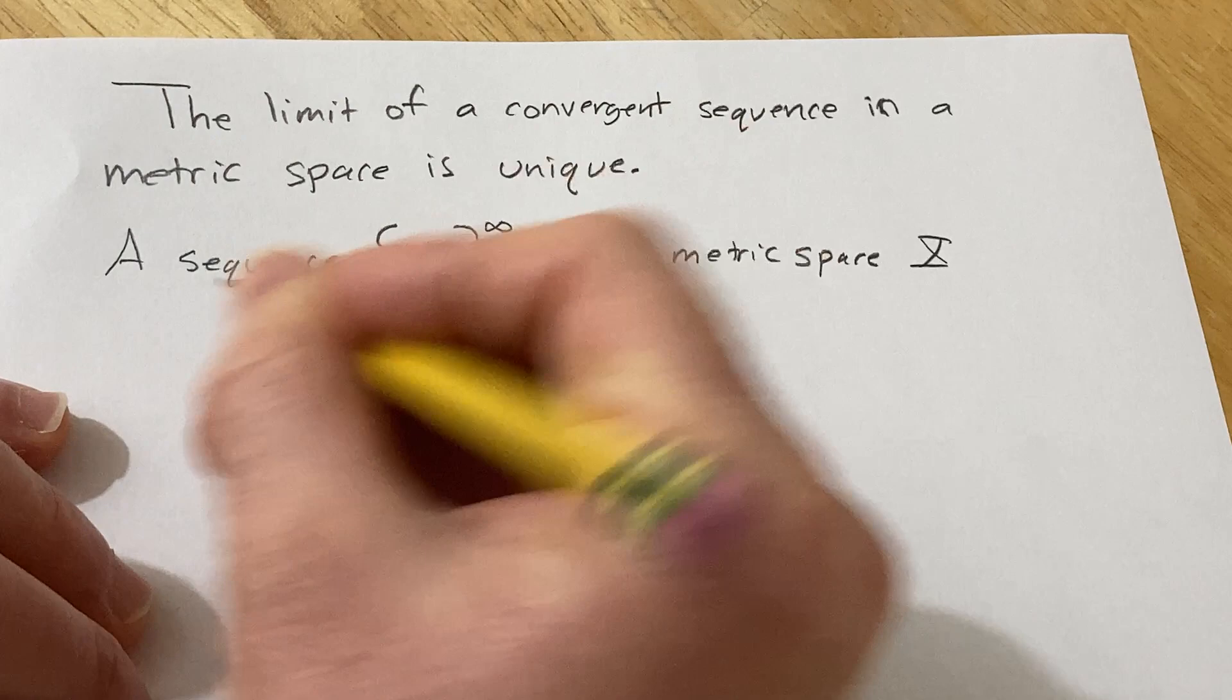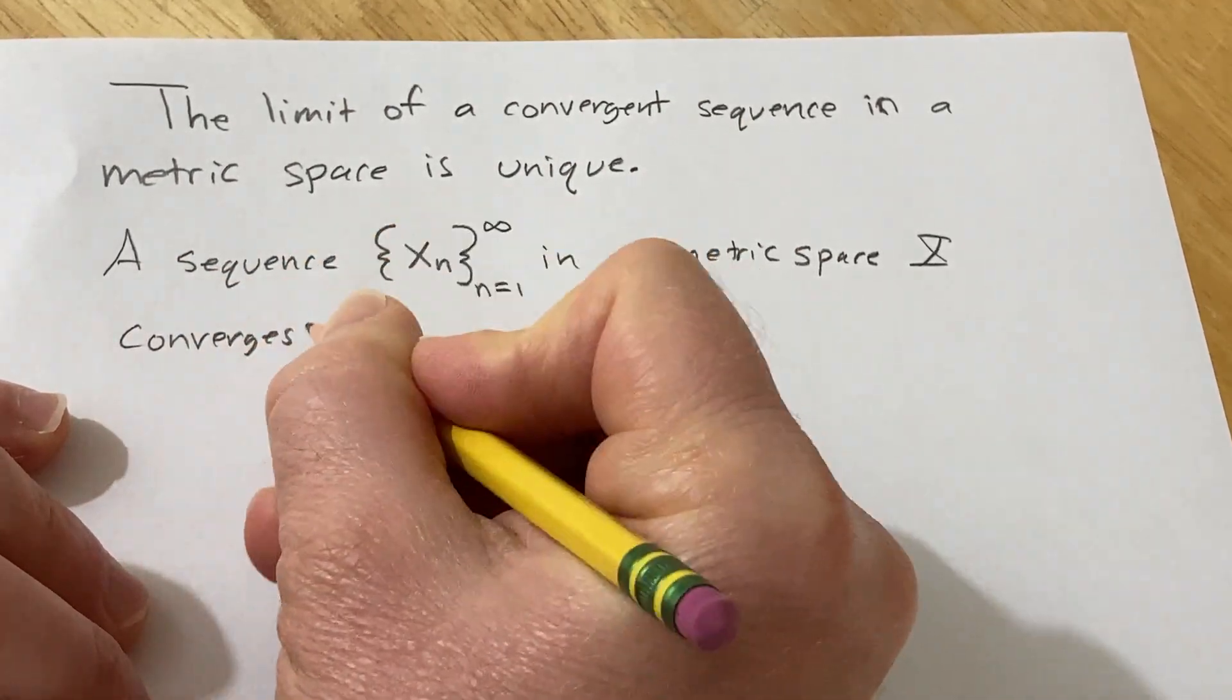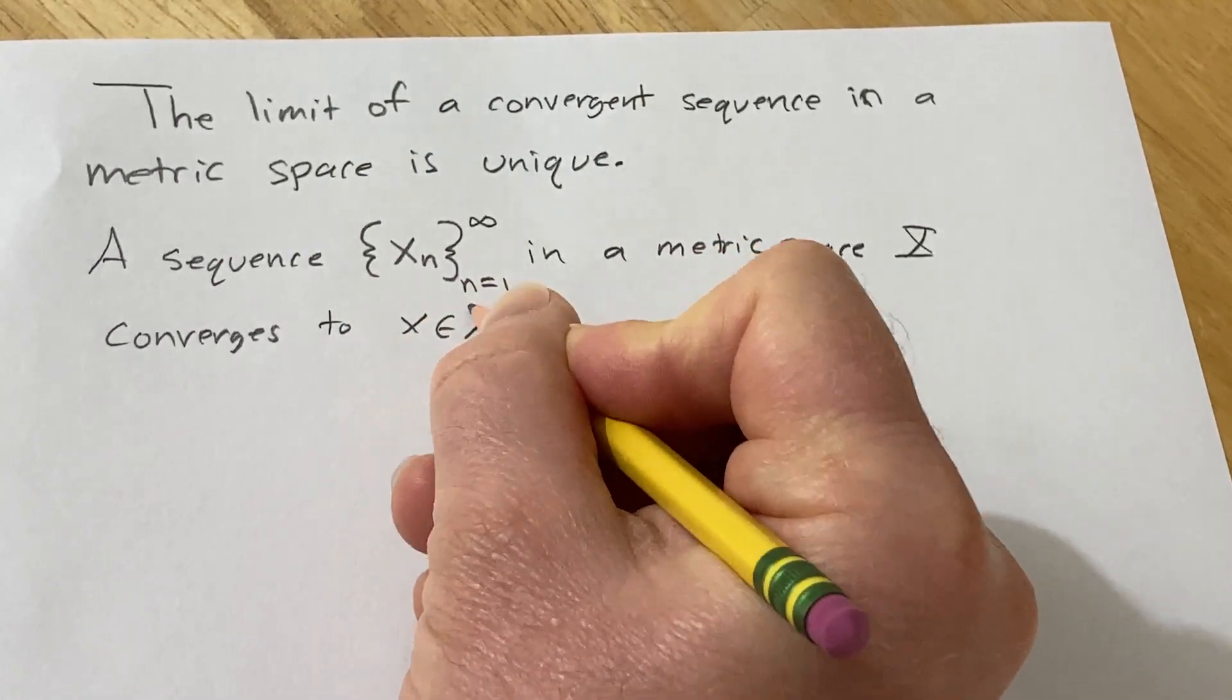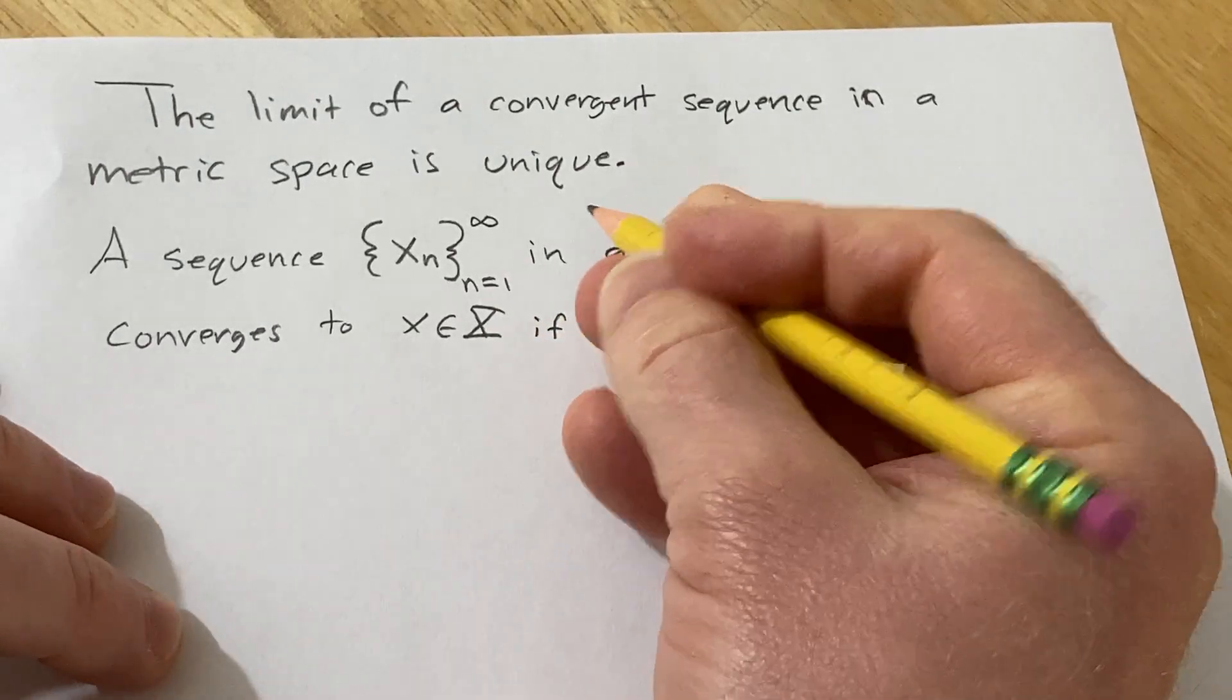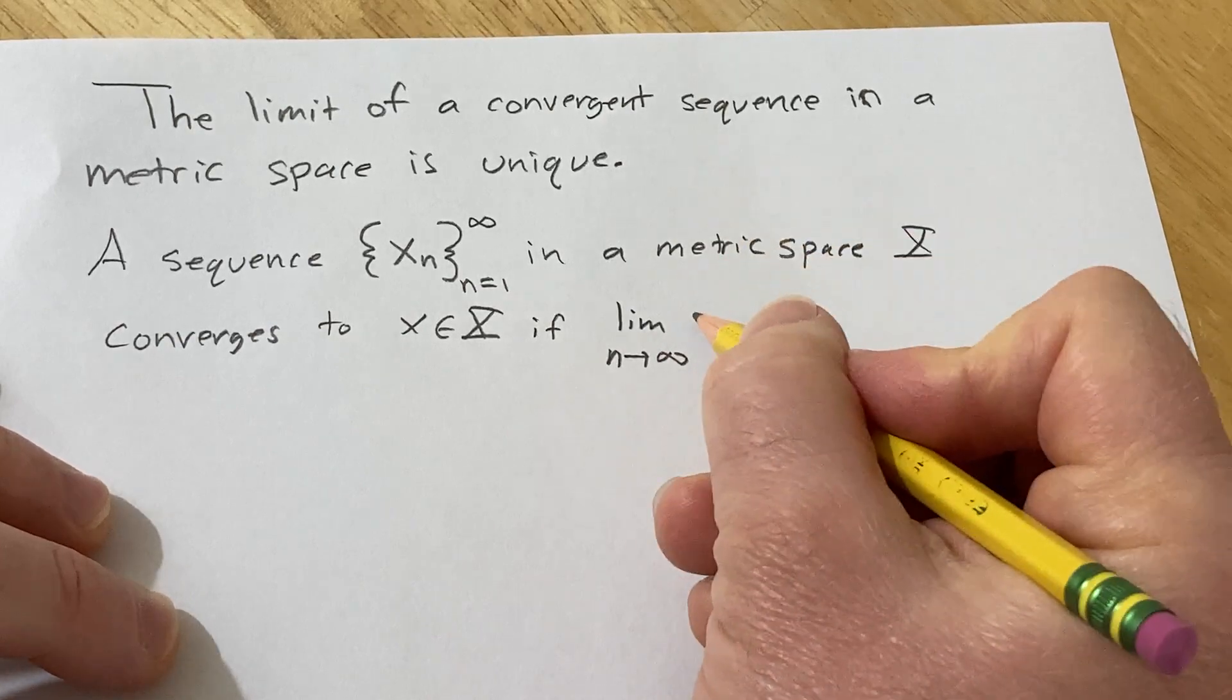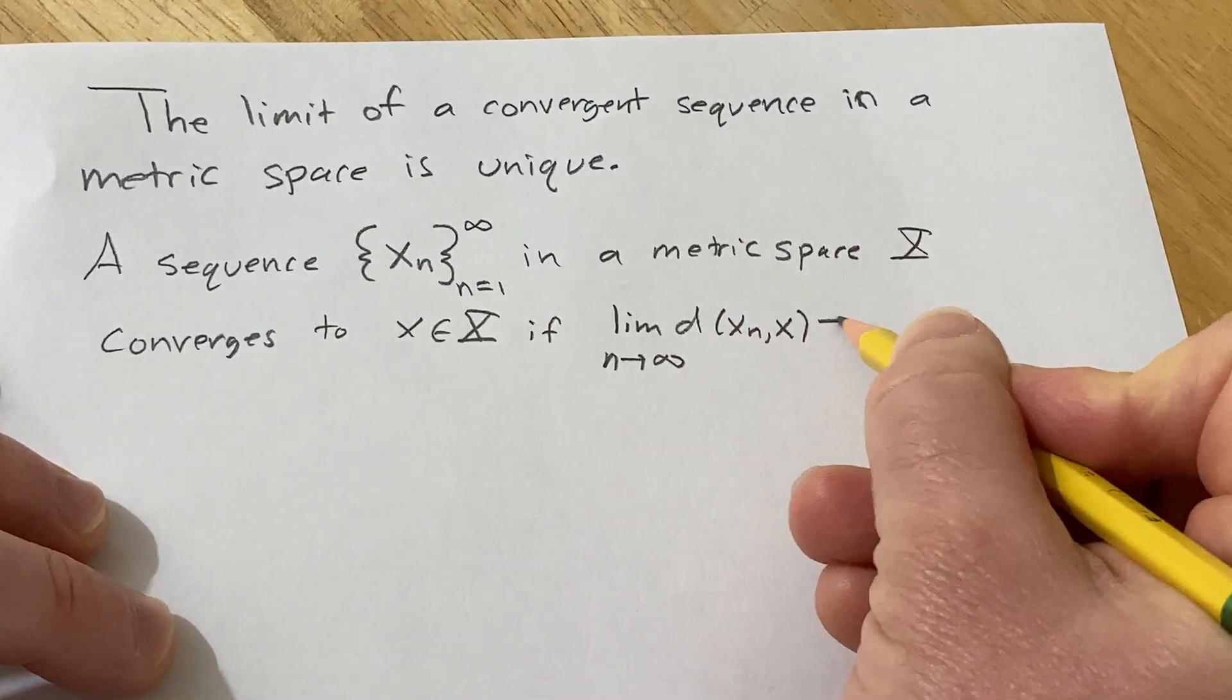Capital X converges to x in X if when you take the limit as n goes to infinity of d of x sub n comma x, you get zero.